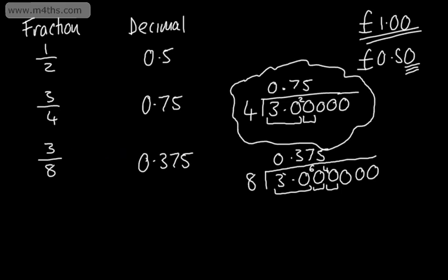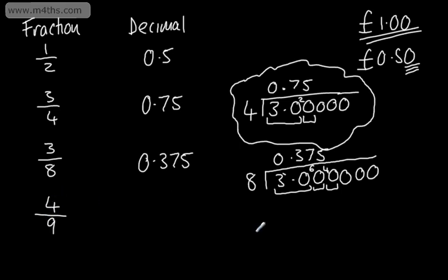Let's look at another one — a different type of fraction. Let's go for 4 ninths. This one is what we call a terminating decimal — it's simply 0.375. Dividing a pound by 9 isn't going to be that clean, so I'm simply going to use short division.